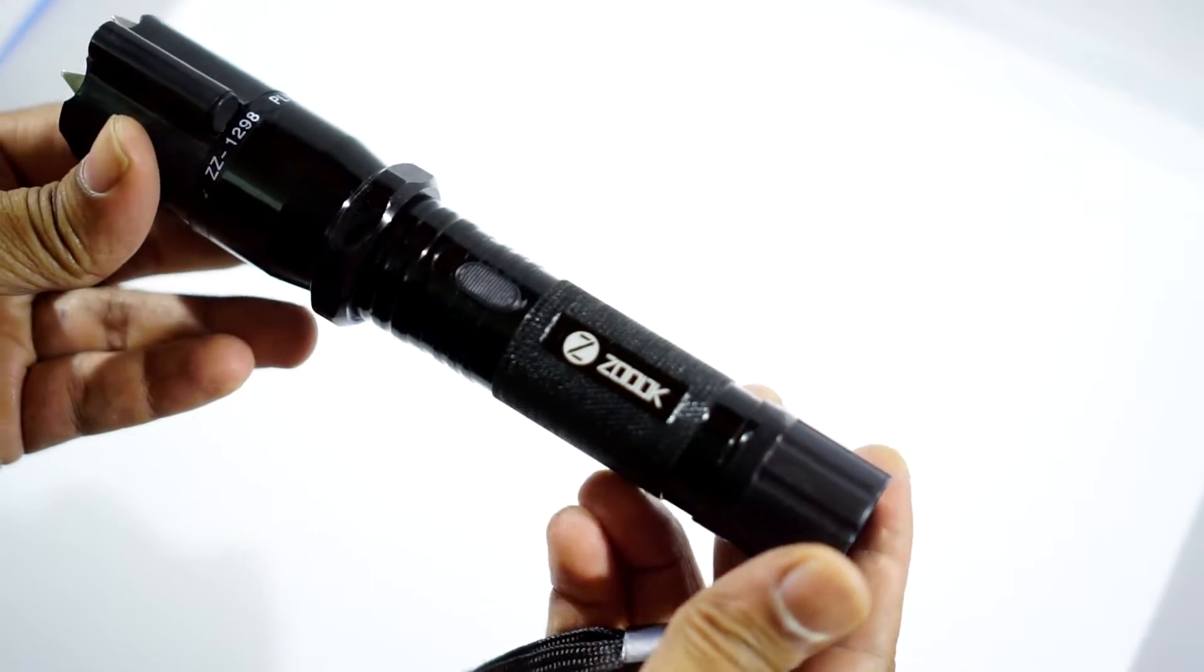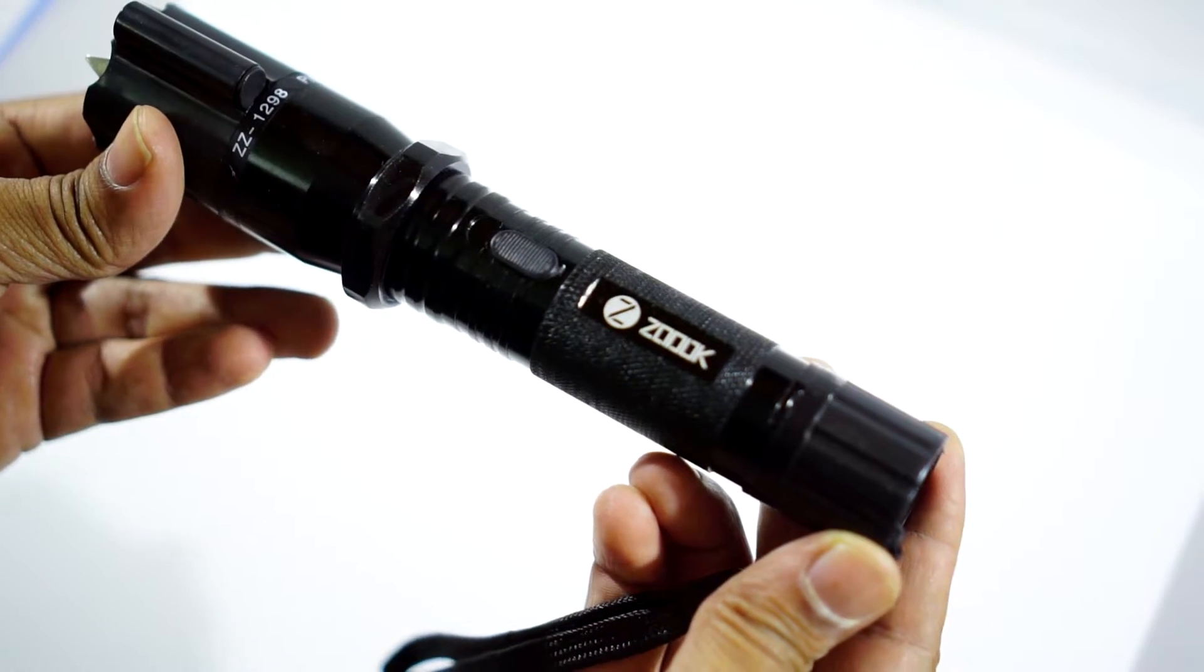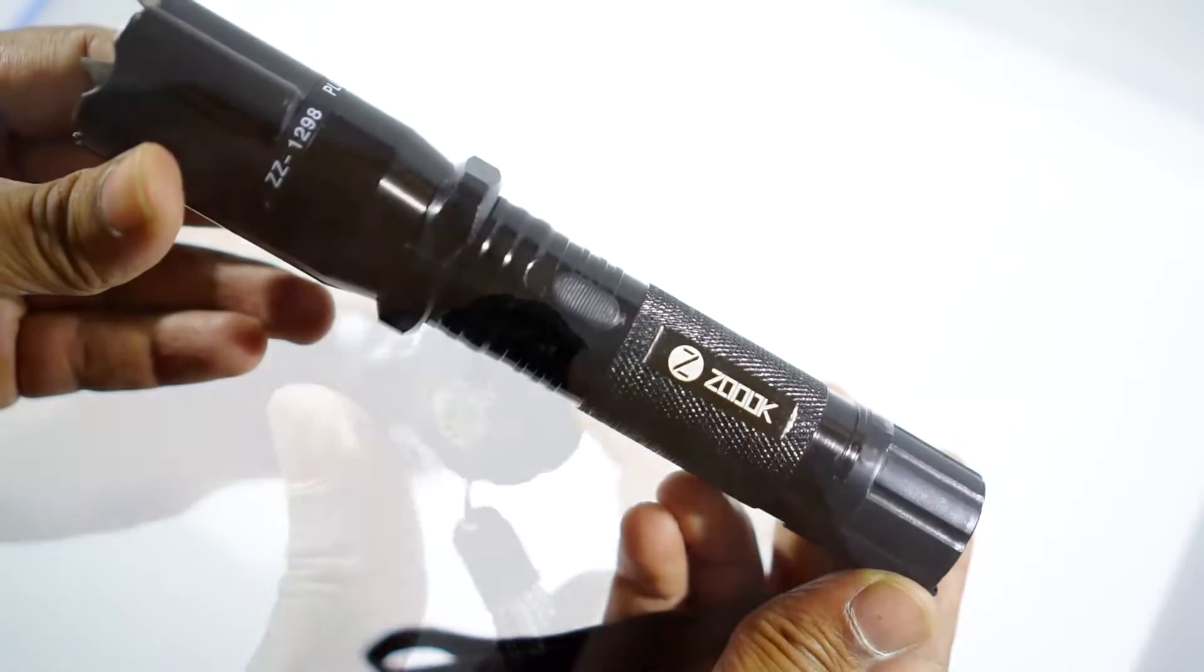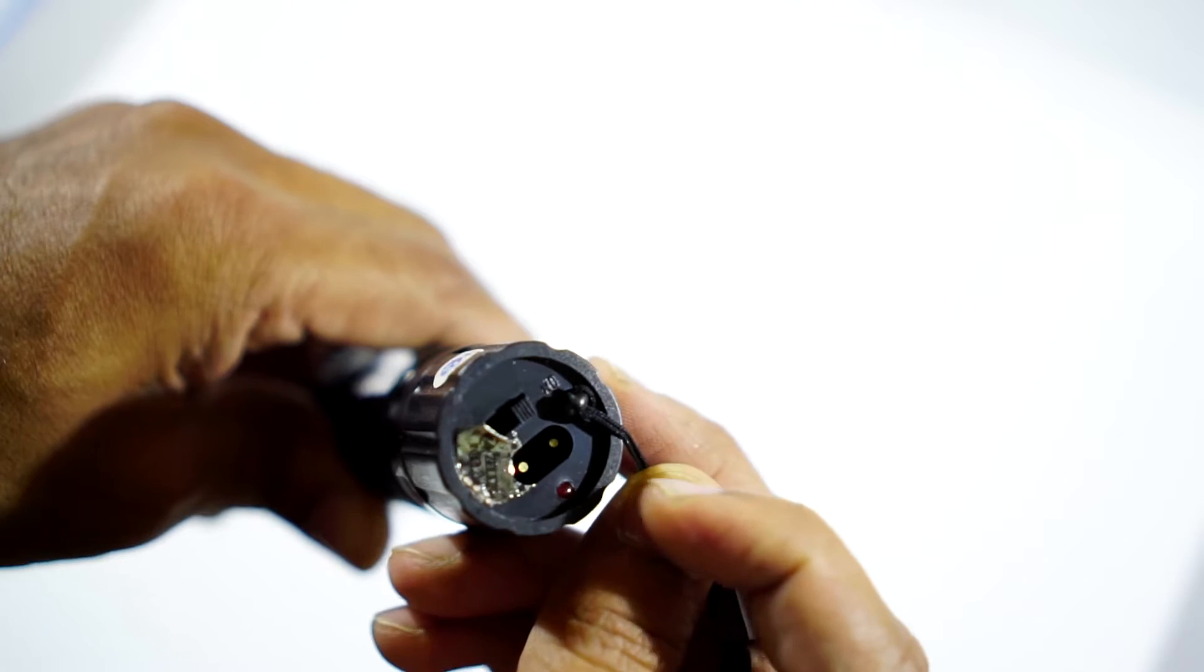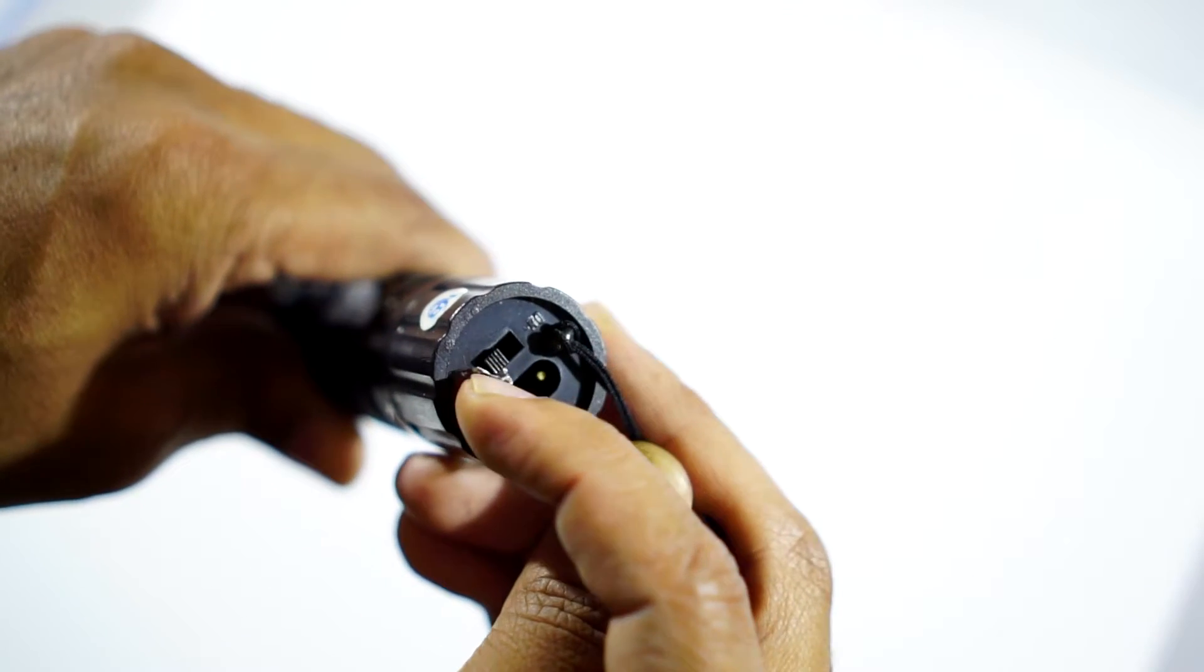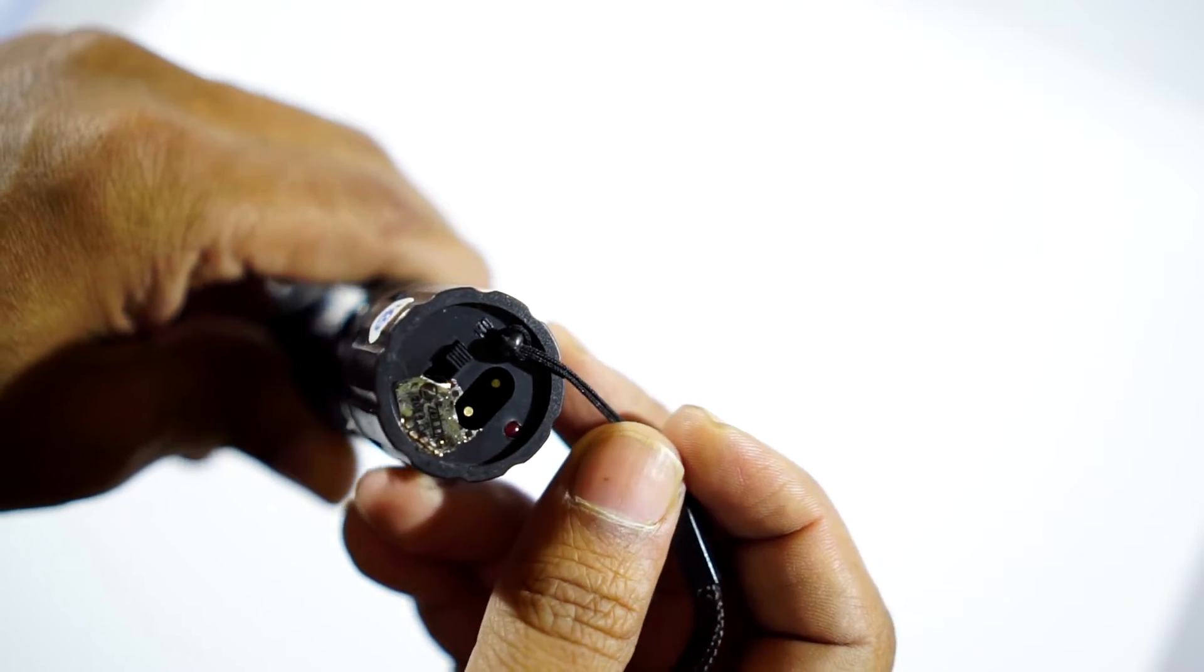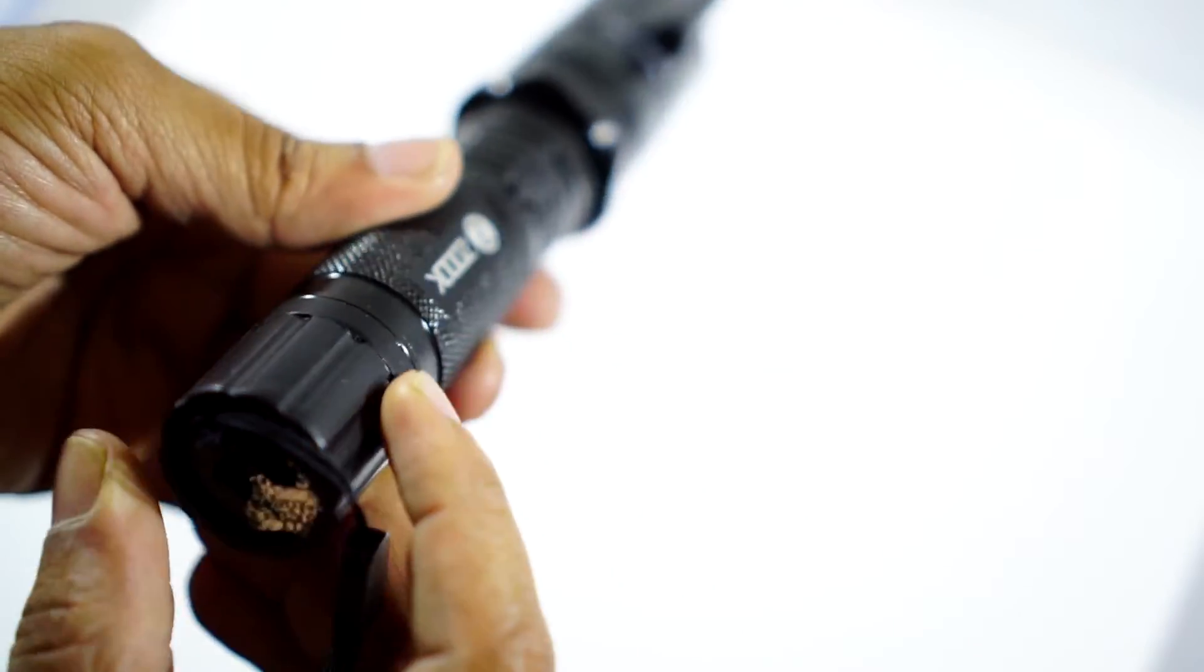The extreme end of the device is the safety failover switch, which protects from accidentally switching on the electric shock mode. On this side, we have a button which is very similar to what you see in a torch.